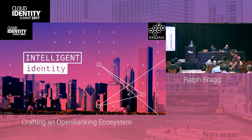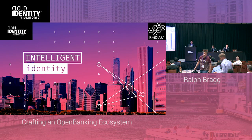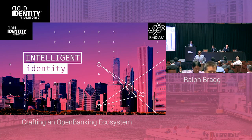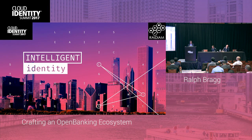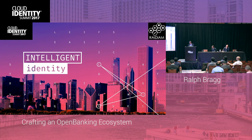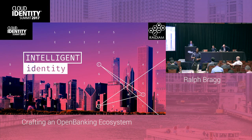What we're seeing across Europe and elsewhere are initiatives taking place to open up the banking sector. In the UK, we have the Competition and Markets Authority driving change to encourage consumers to switch banks, thereby promoting competition and improved services in that sector. Technology plays an important part in this, and we'd like to welcome Rolf Bragg today, who's been working on the development of the technology and architecture that will help facilitate this here in the UK.